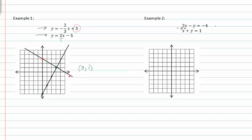First equation we can subtract two x from both sides. And we get negative y is equal to negative two x minus four. Which will give us y equal to two x plus four, dividing by negative one.